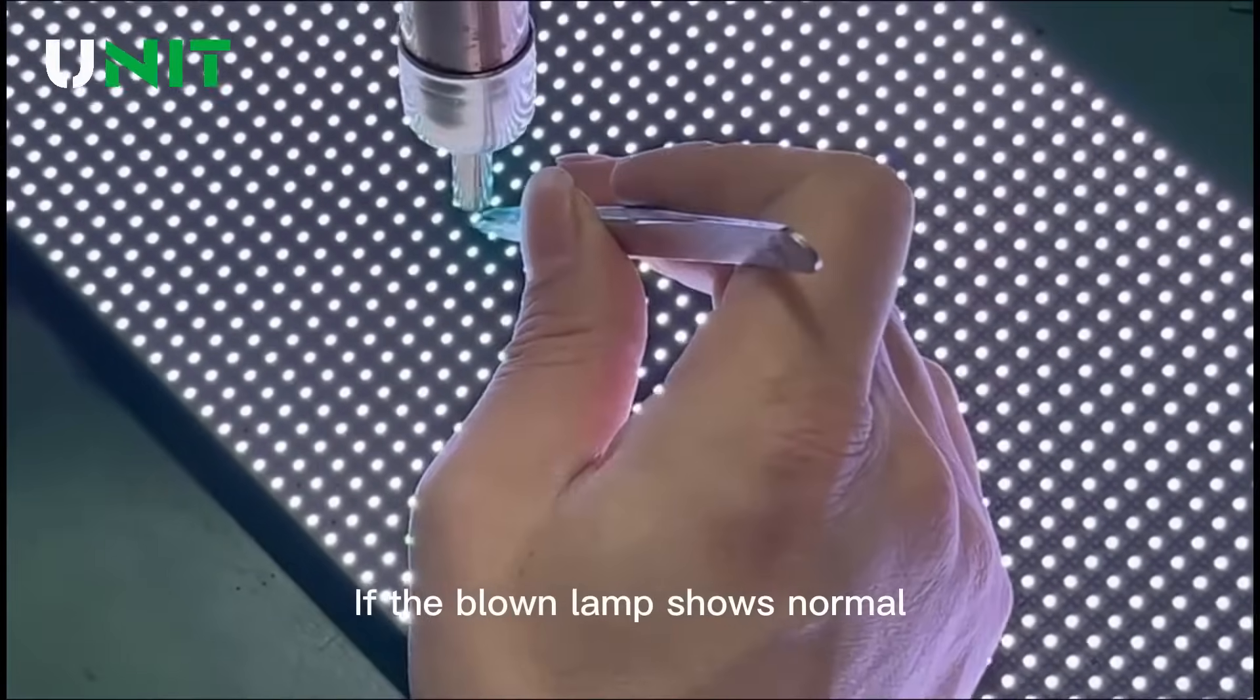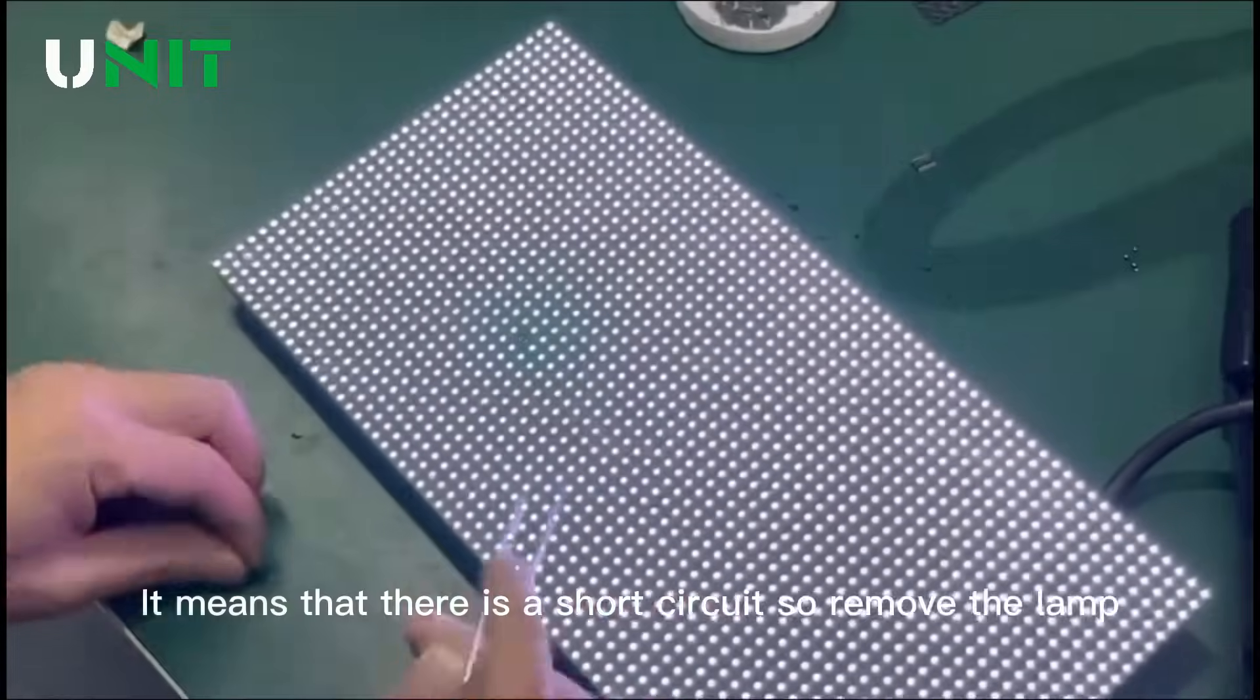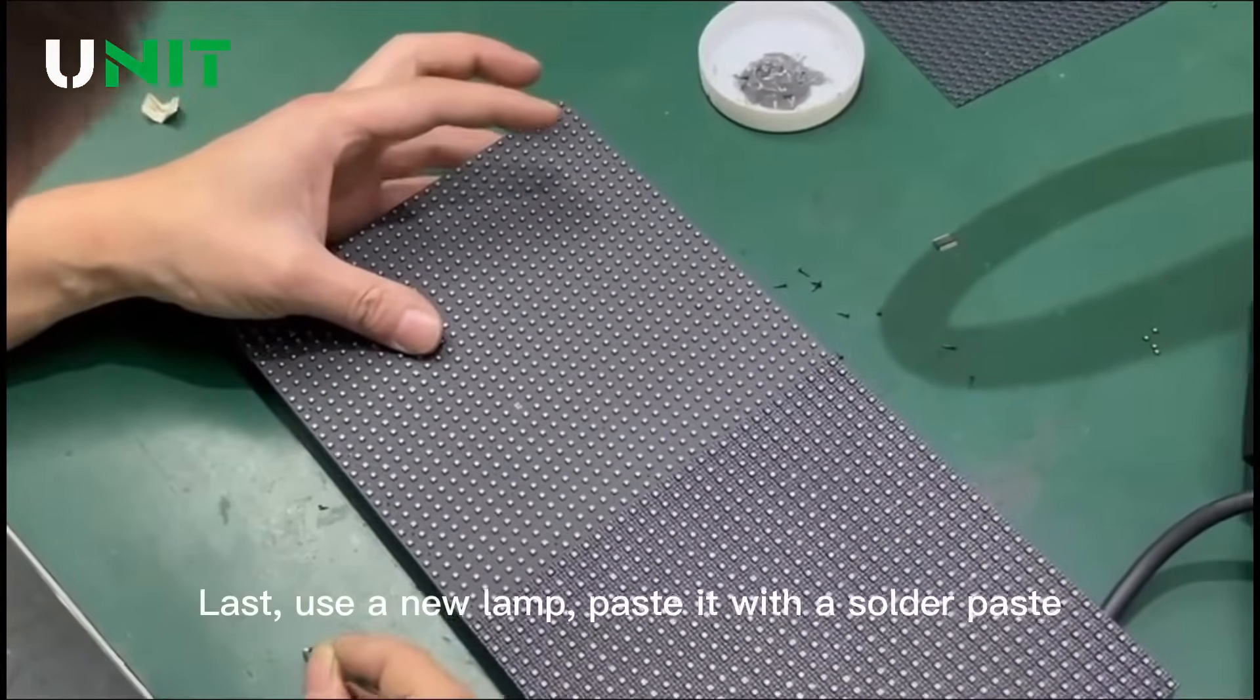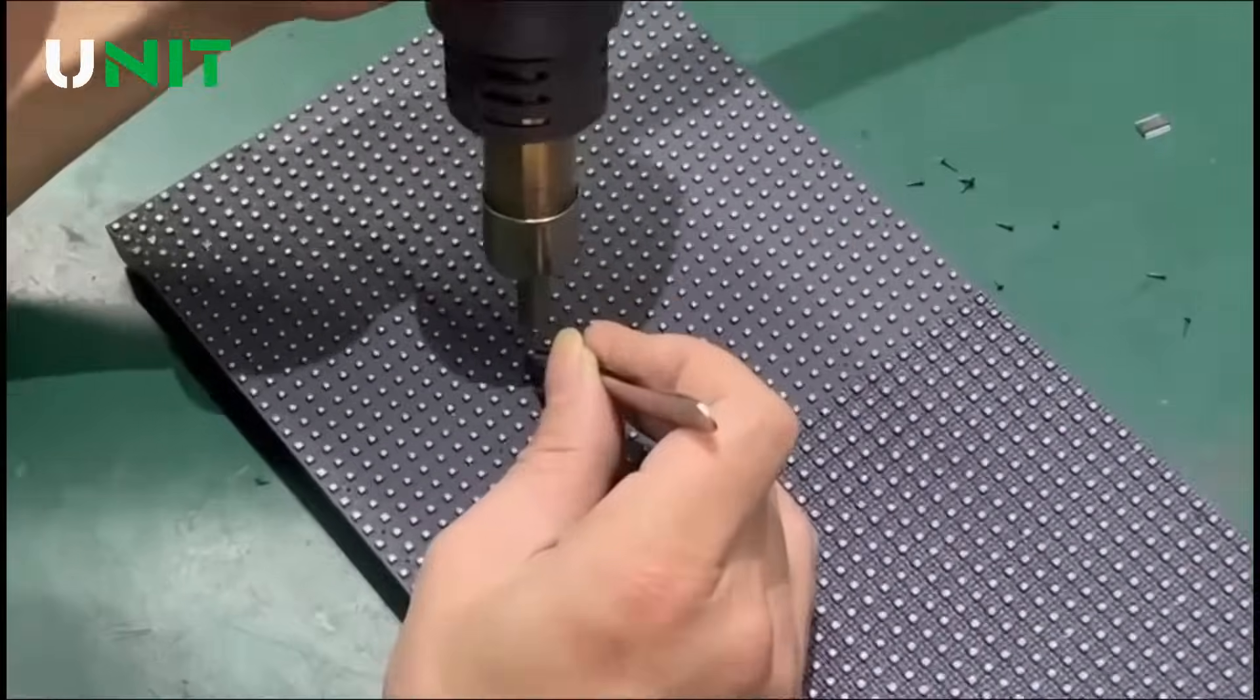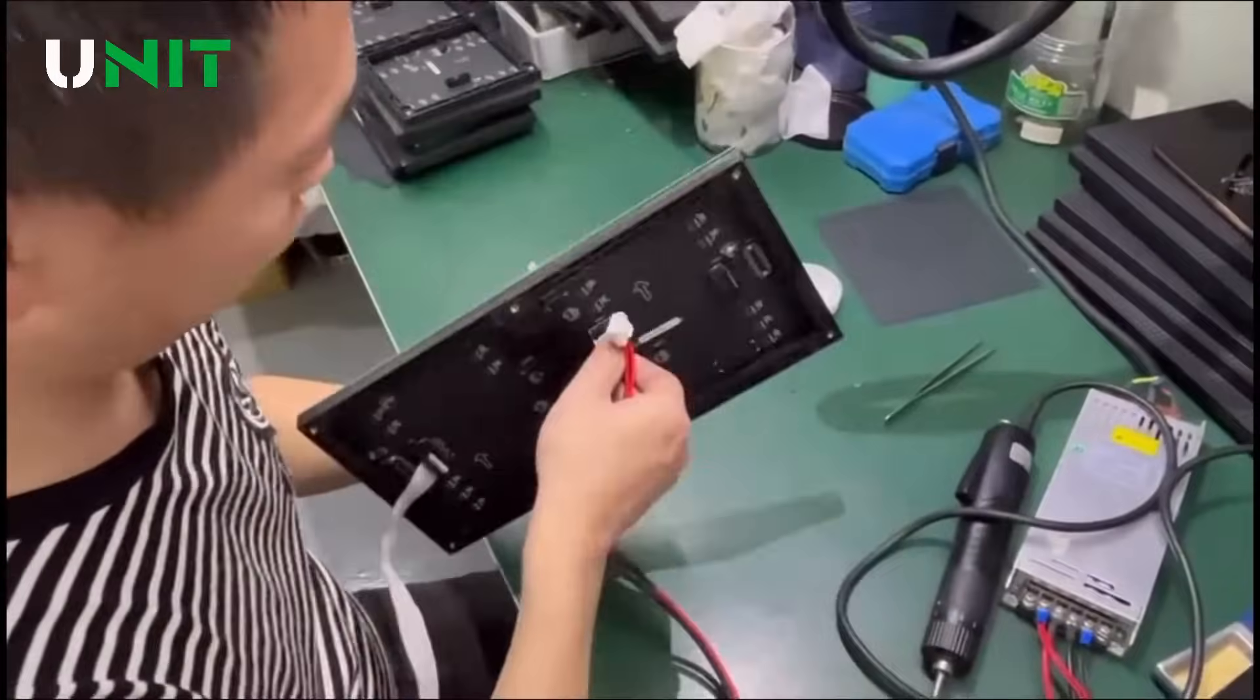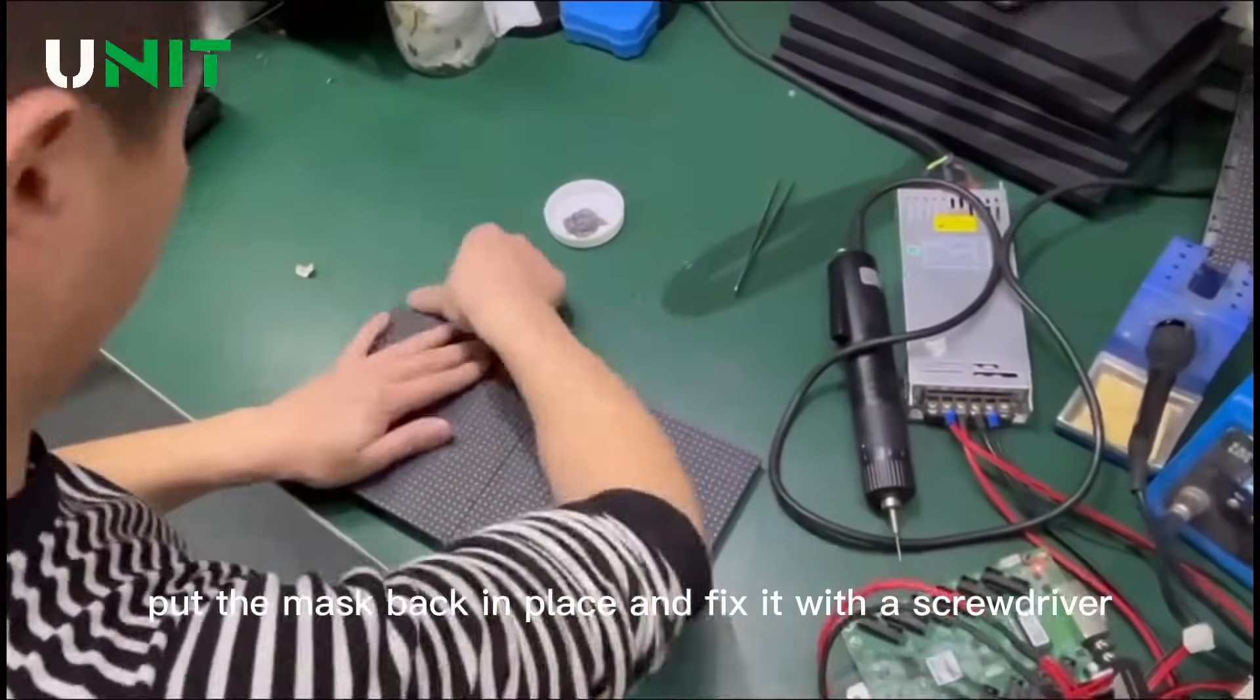If the blowing lamp shows normal, it means there is a short circuit, so remove the lamp. Last, use a new lamp, paste it with solder paste, and put it back in its original position. Repair completed. Put the mask back in place and fix it with a screwdriver.